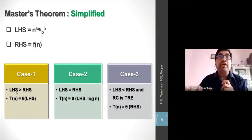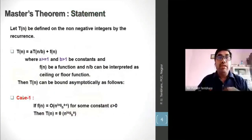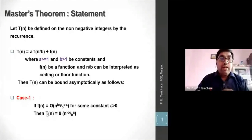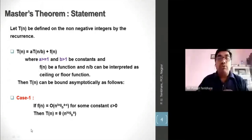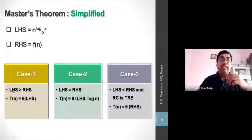Technically, in Case 1: if left-hand side n^(log_b(a)) is greater than right-hand side f(n), then Case 1 of Master Theorem is applicable, and T(n) = Θ(n^(log_b(a))).